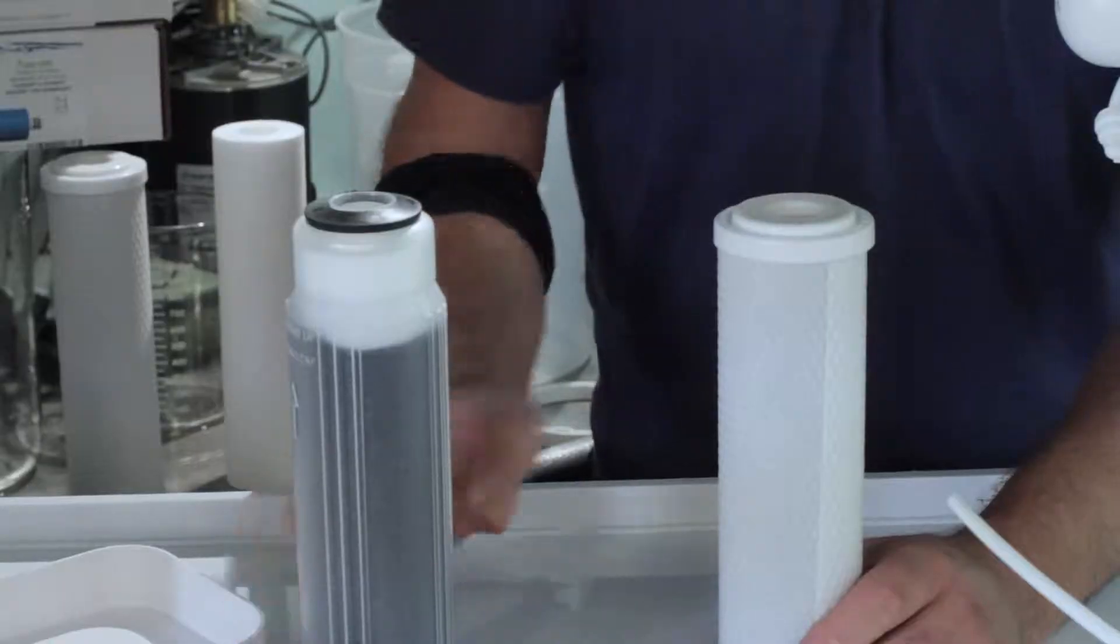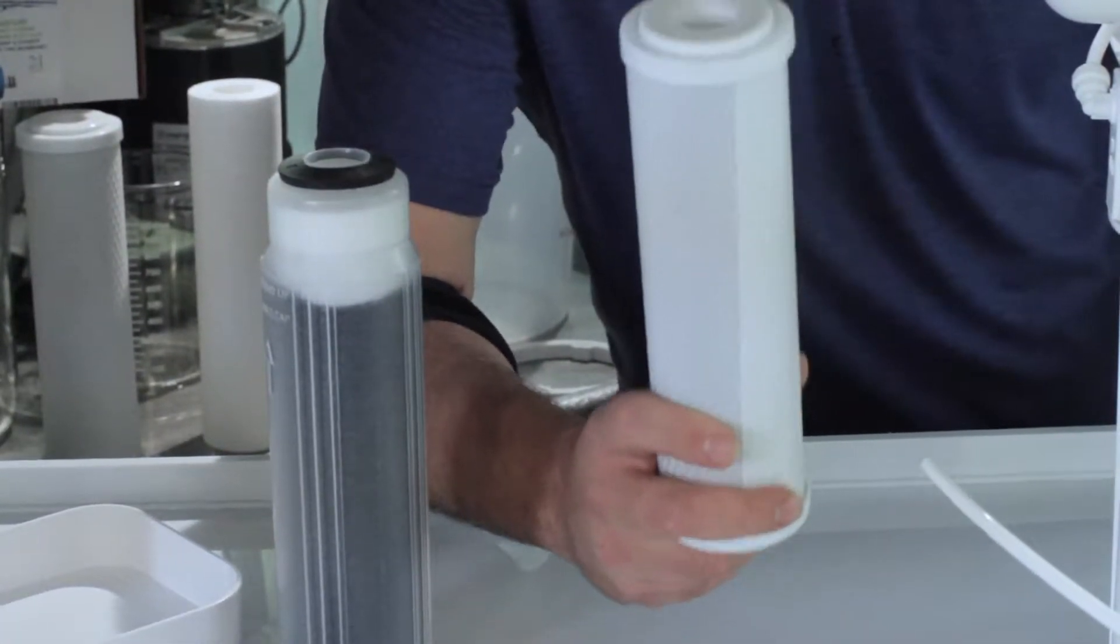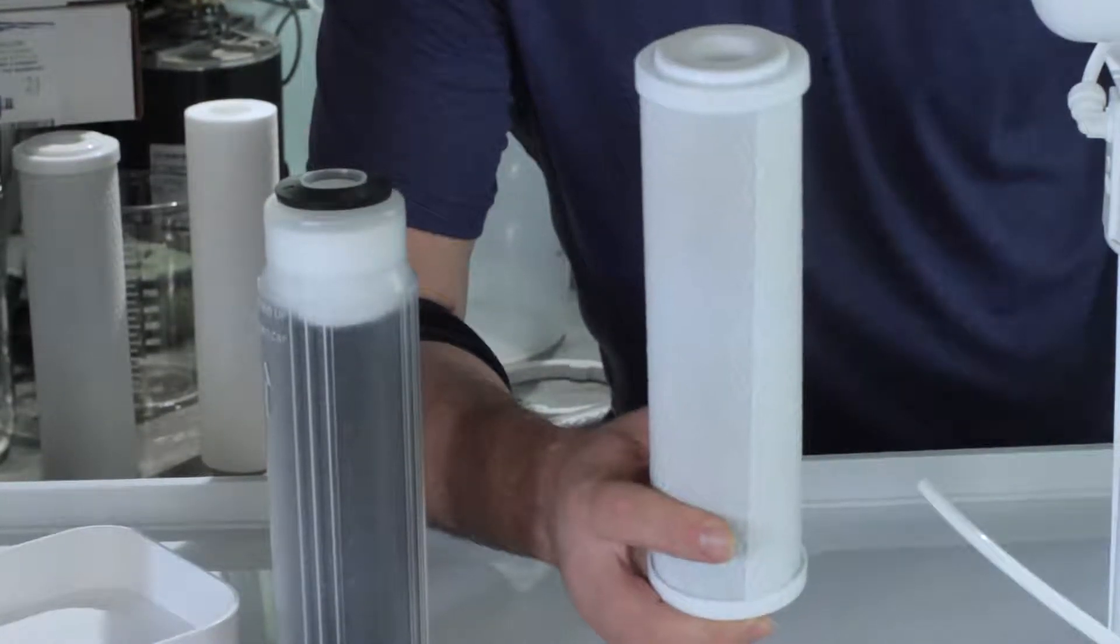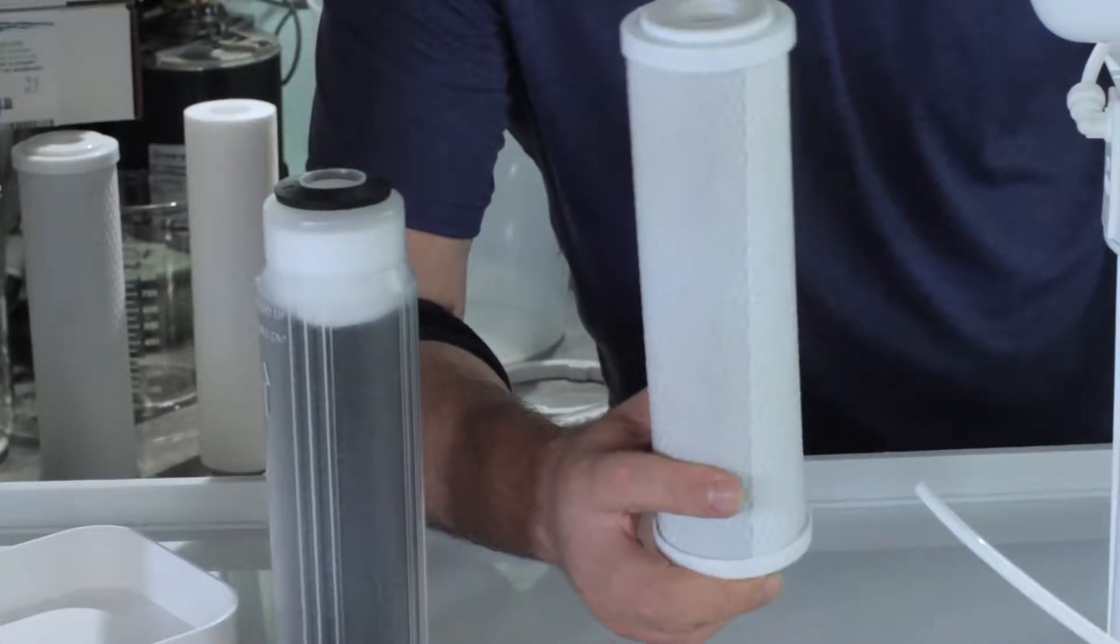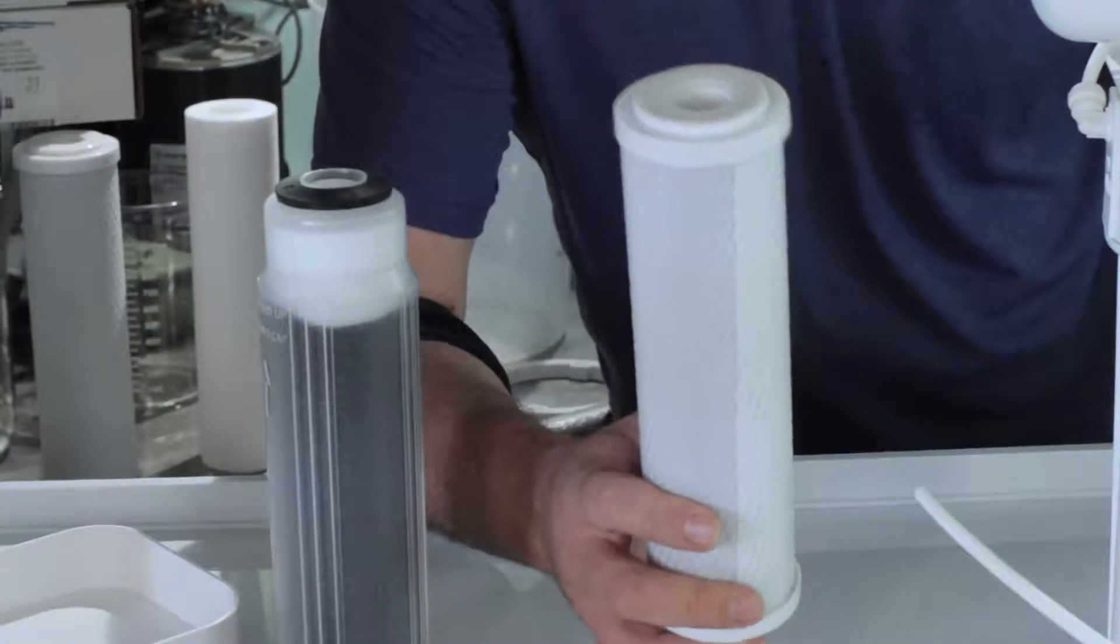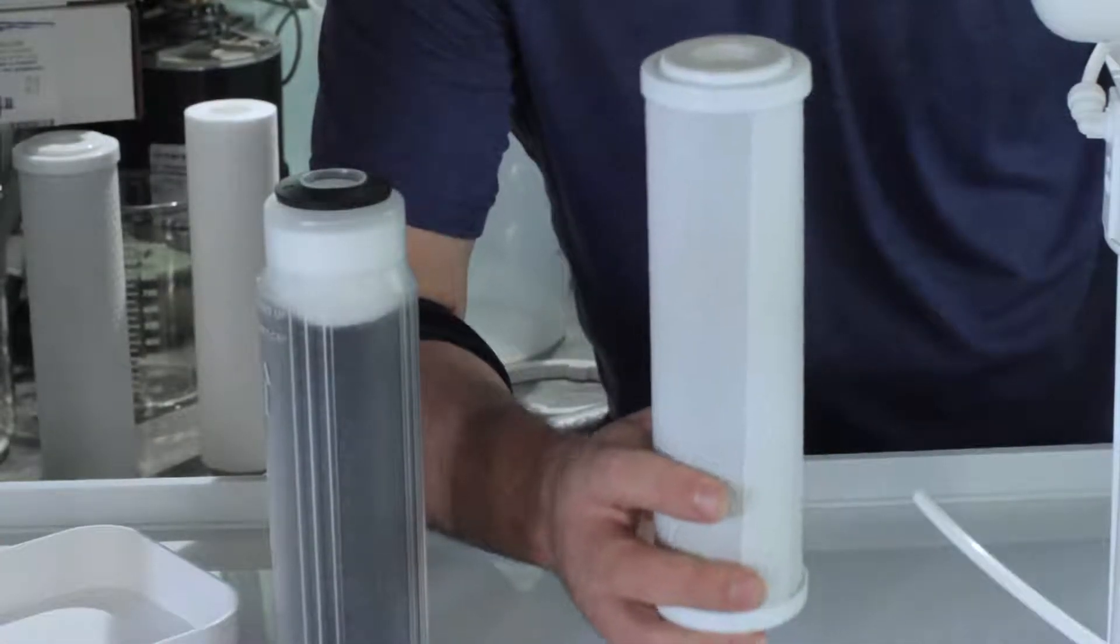Sometimes the units, depending on what the store orders, come with a standard carbon block. It could be this CC block, which is a coconut carbon block. It's compressed carbon and it's very dust free, and you don't have to flush them.